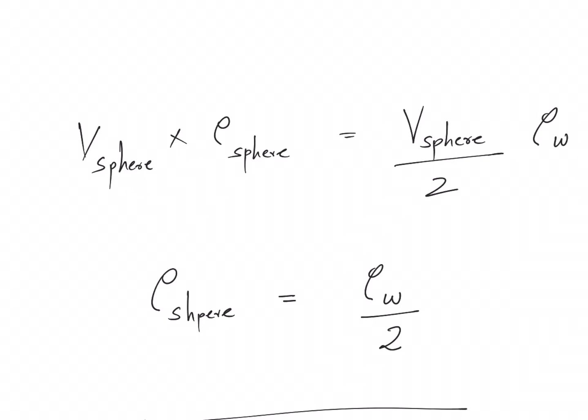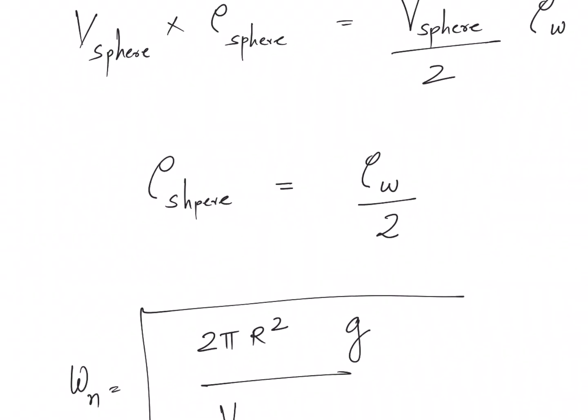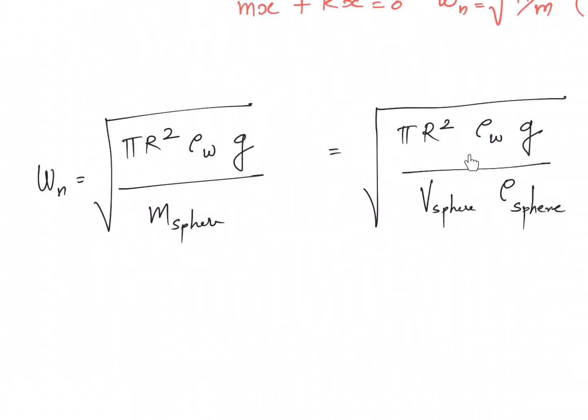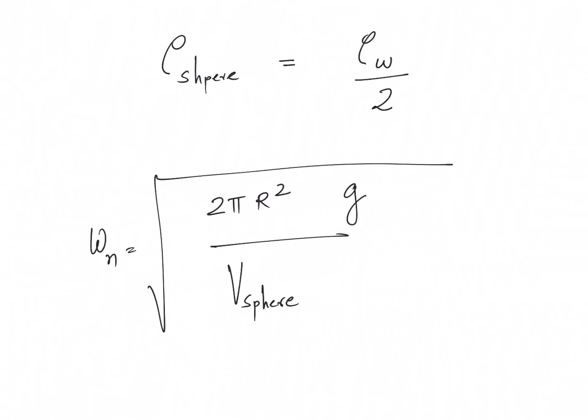But we can invoke the condition of static equilibrium. Under static equilibrium, we had the weight of the sphere balanced by the buoyancy force. So the buoyancy force is this quantity multiplied by g, where g is the acceleration due to gravity, and this term times g will give you weight of the spherical ball. So this helps us to get a relation between the density of the spherical ball and water. Now I can use this expression in equation one. Once I substitute, I end up with this expression: natural frequency in terms of volume of the sphere.